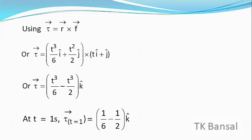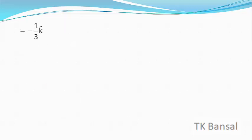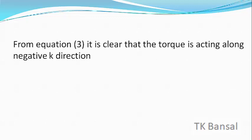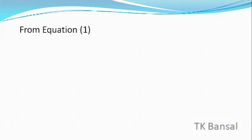Substituting t = 1 second, we get τ at t = 1 equals (1/6 − 1/2) k̂ = −(1/3) k̂. The modulus of τ vector at t = 1 s is 1/3 N·m, which matches choice A — so choice A is correct. Since τ vector = −(1/3) k̂, it points in the negative k̂ direction, so choice B is wrong.